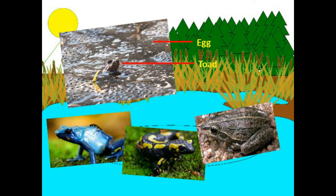Did you know? Amphibians can live on land and in water because they can breathe in two different ways. First, they can breathe using their lungs — frogs also have lungs, just like mammals. Second, they can also breathe through their skin, because their moist skin can absorb oxygen. Do you understand, children?